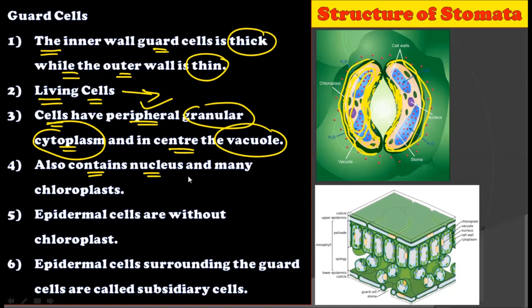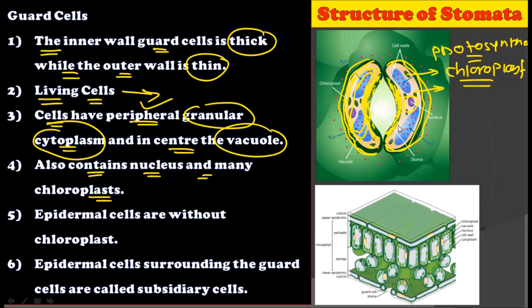Guard cells also contain the nucleus and many chloroplasts. Being rich in chloroplasts, these guard cells also perform the process of photosynthesis. So the guard cells, in addition to peripheral granular cytoplasm and vacuole, also contain the nucleus plus chloroplasts. One important thing to notice is that the epidermal cells surrounding the stomata are without chloroplasts. The guard cells are modified epidermal cells and they contain many chloroplasts, but the remaining epidermal cells do not have any type of chloroplasts.